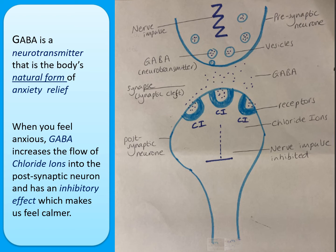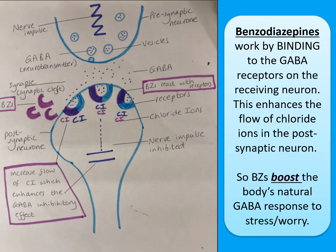Benzodiazepines work by binding to the receptors on the post-synaptic neuron alongside GABA. This enhances the inhibitory effect by increasing the flow of chloride ions into the next neuron, potentially preventing the next nerve impulse from firing at all. Think of benzodiazepines as a booster to the body's natural GABA anxiety-relief system — they give it a big helping hand, greatly increasing that inhibitory response.